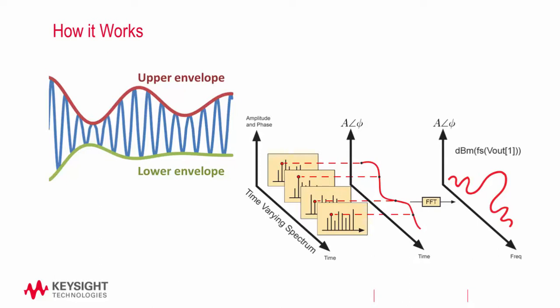We capture the spectral content of each time point based on the step of the simulation. A harmonic balance simulation is performed at each time point, and we can recreate the frequency response at that point using a Fourier transform. As a result, we can plot a large variety of data such as amplitude, phase, frequency, and harmonics all versus time.